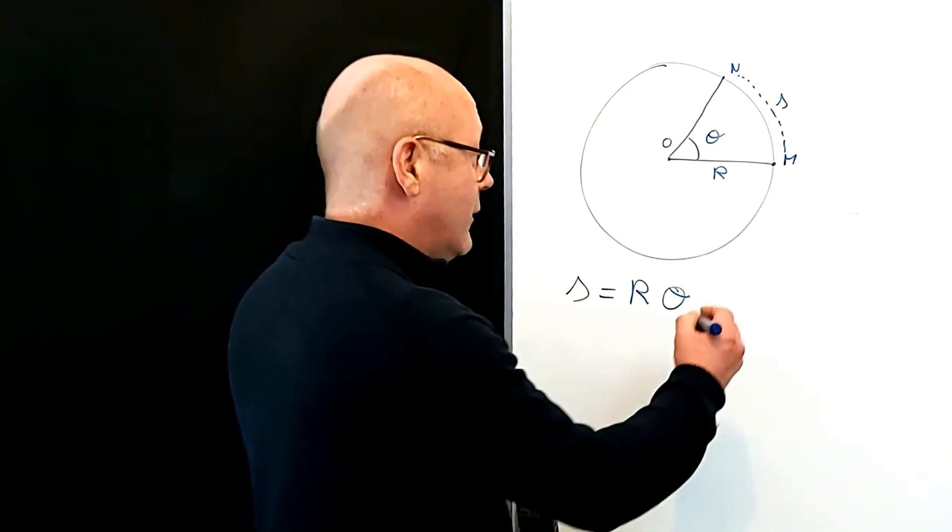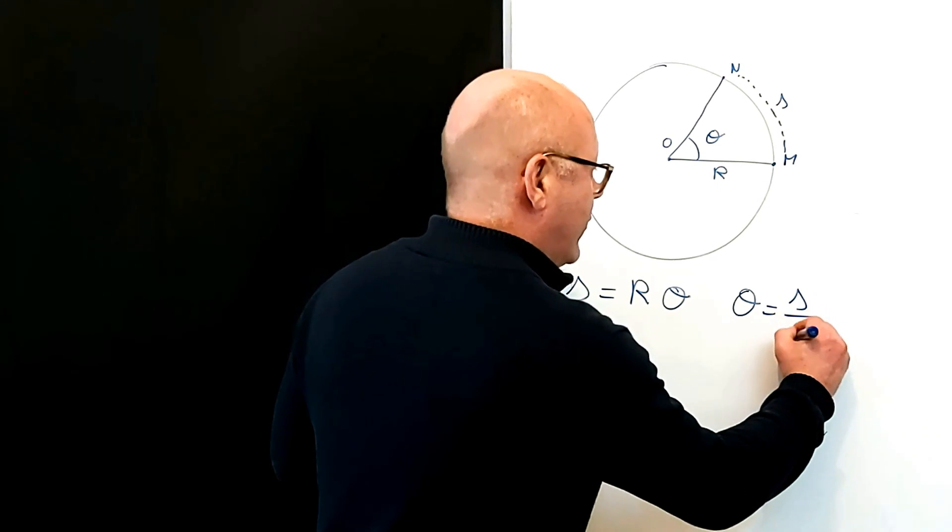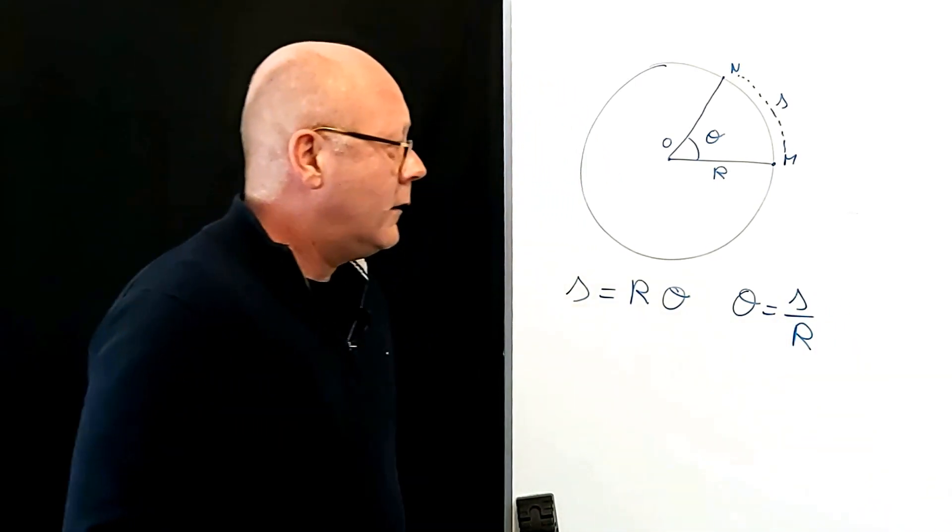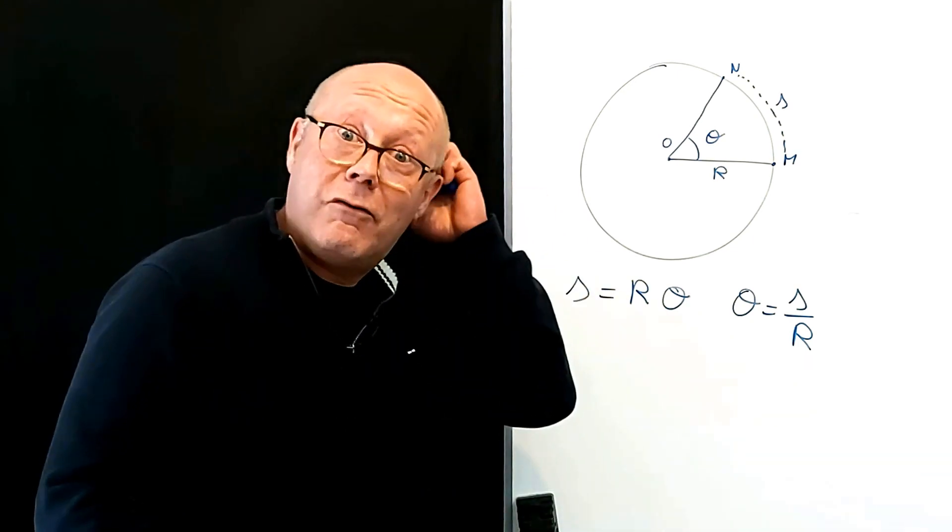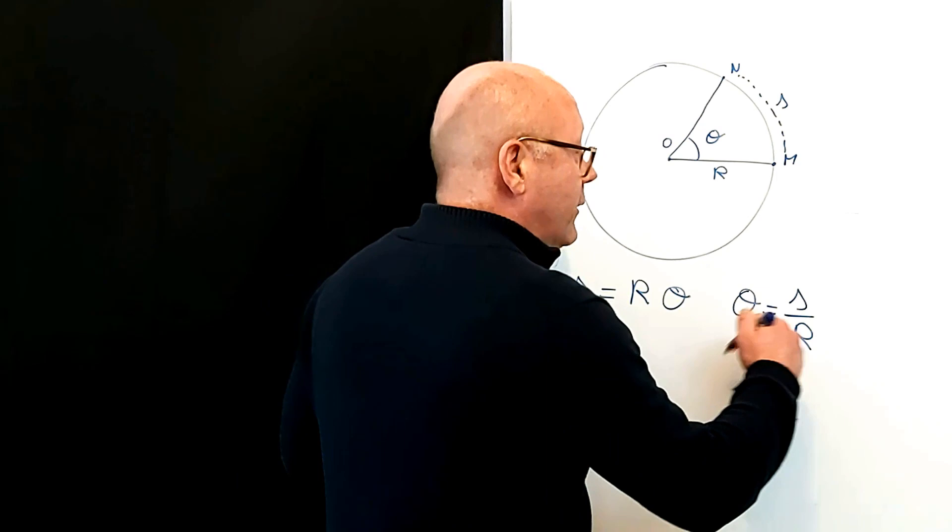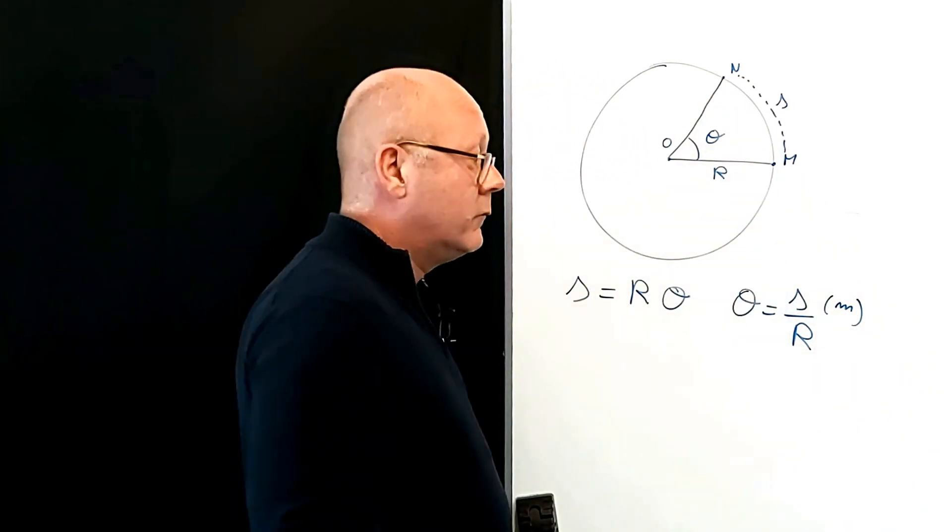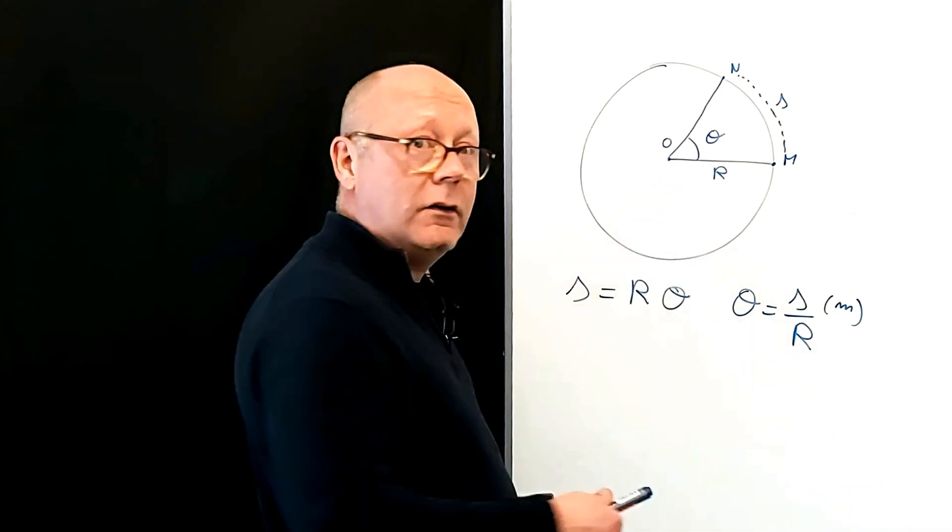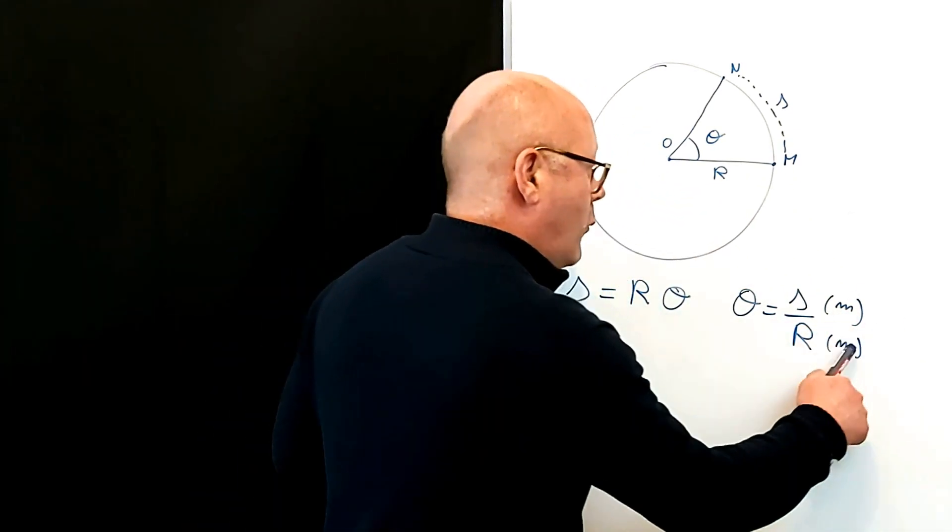Okay, so let's put the angle as subject. θ is S over R. And let's look at the units, right? So we can define the unit of the angle and therefore maybe find out what it is. S is in meters. Yeah, it's a distance. It's the arc. And the radius will also be in meters. It's the radius. So I've got meters over meters.